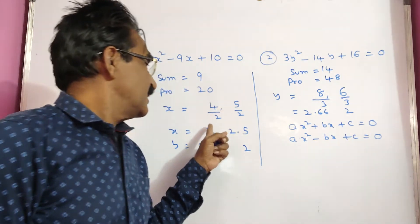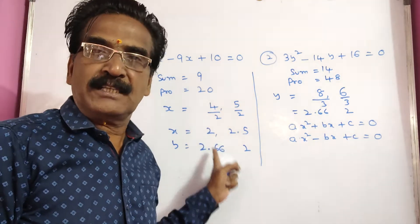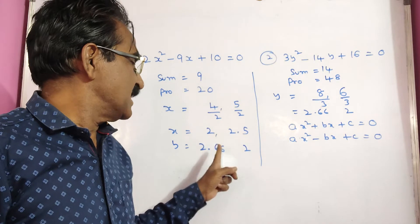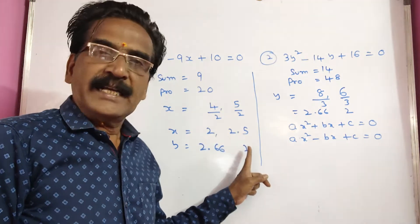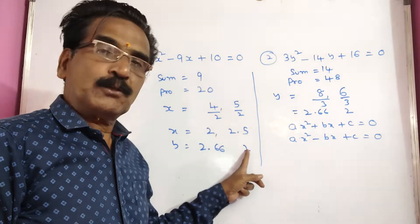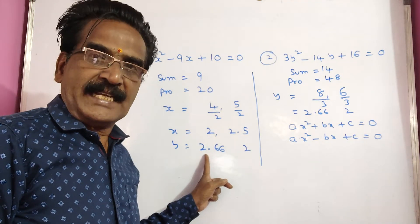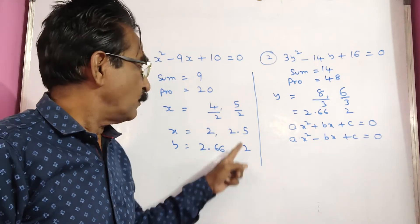See friends, here let us compare this x value with these y values. 2 is less than 2.66, 2 is equal to or greater, 2 is equal to 2, 2 less than. So less than or equal.